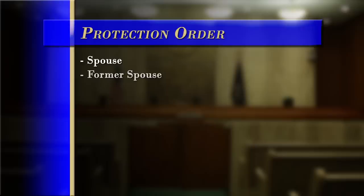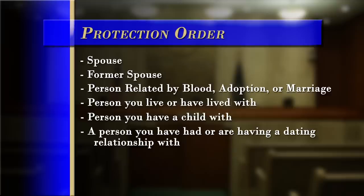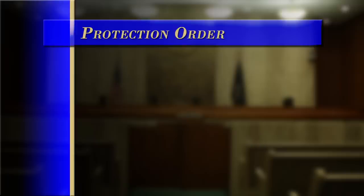A protection order is a civil order issued by the court to protect you against a spouse, a former spouse, a person related to you by blood, adoption, or marriage. You can also seek protection against a person you live or have lived with, have a child in common, or a person with whom you have had or are having a dating relationship. A parent or legal guardian may file on behalf of a minor child.